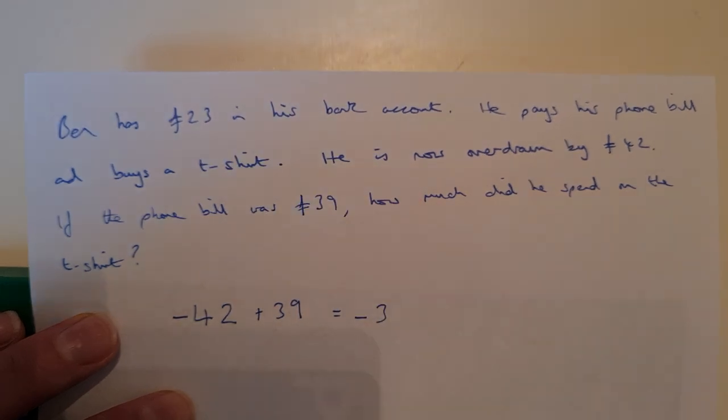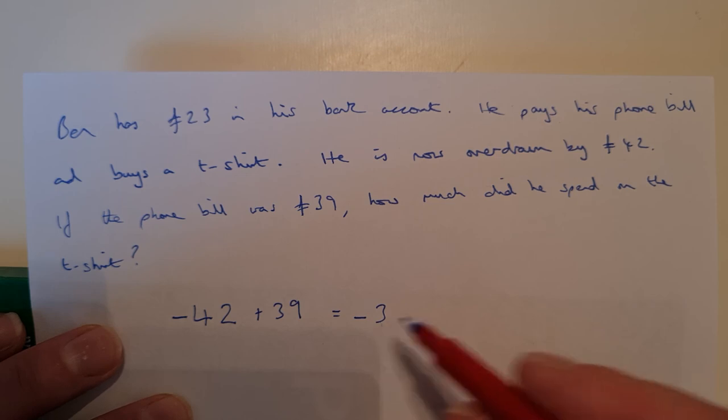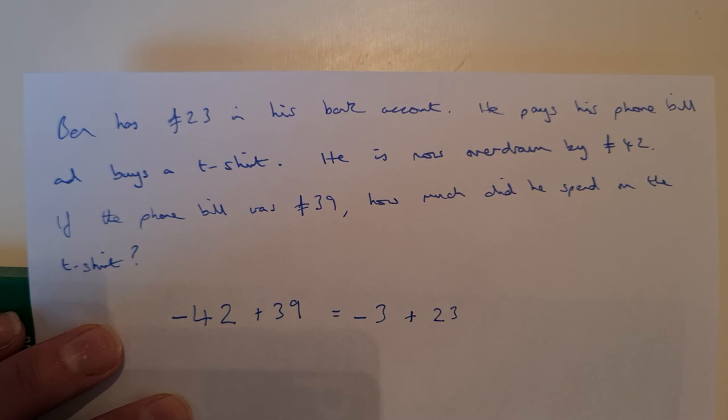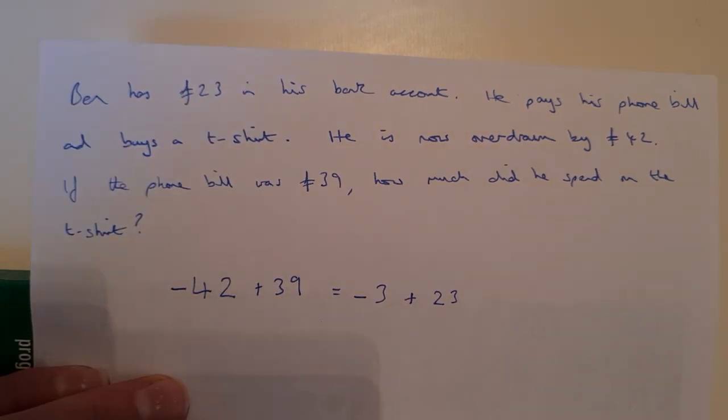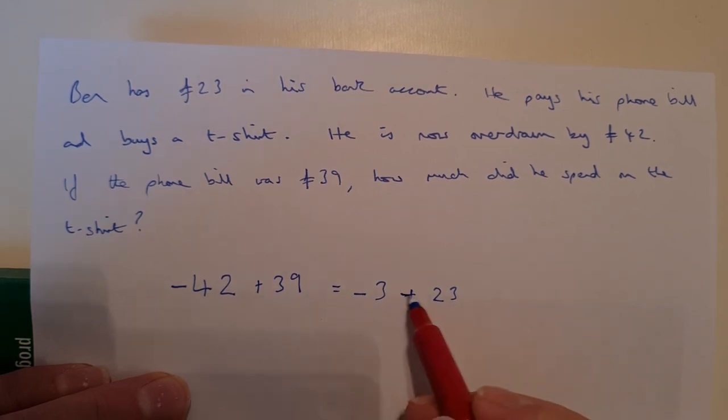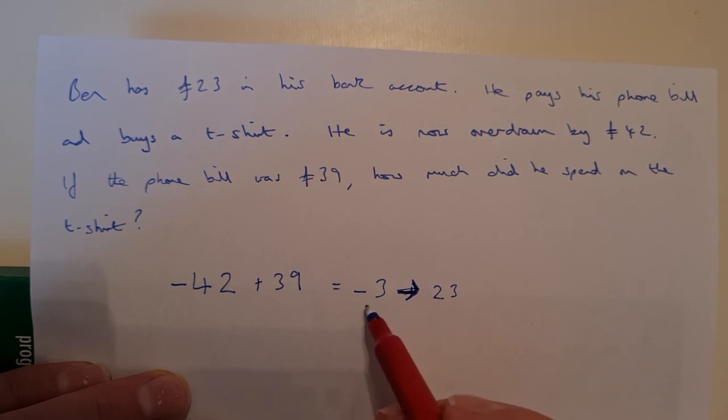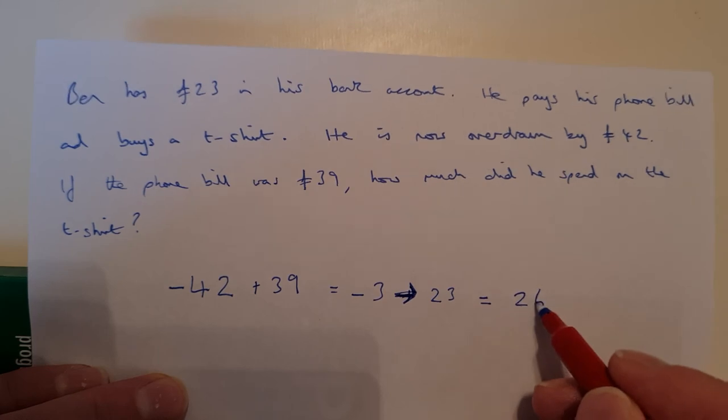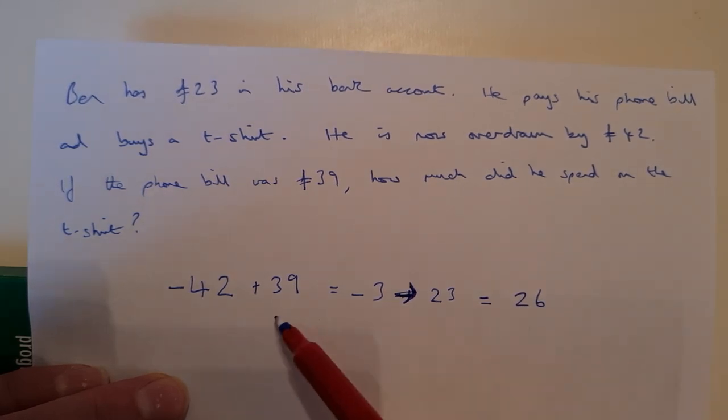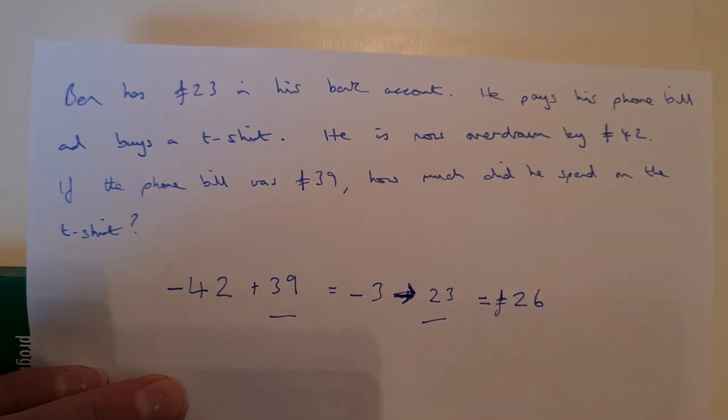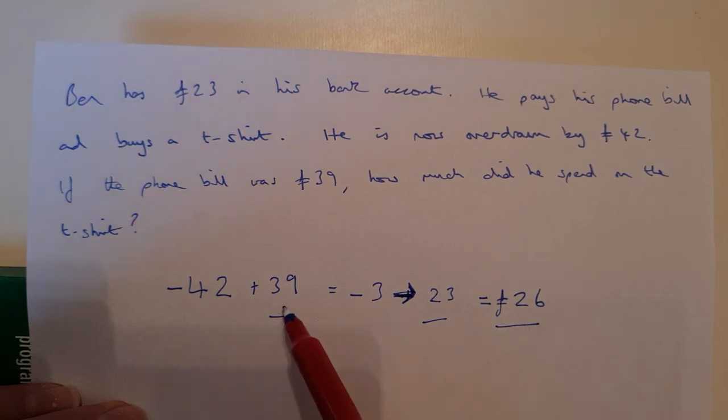Now, I know he had £23 in his bank account altogether. So I'm going to count along now from minus 3 to 23. I'm counting along there, I'm not adding. When I count along from minus 3 to 23, I find that I have counted along 26 places. So the difference between his phone bill and how much he has in his bank account is £26. And that is the amount he spent on his t-shirt.